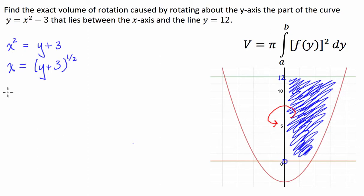So our volume is going to be equal to pi times the integral from 0 to 12 of our function, which is y plus 3 to the half, all squared dy.